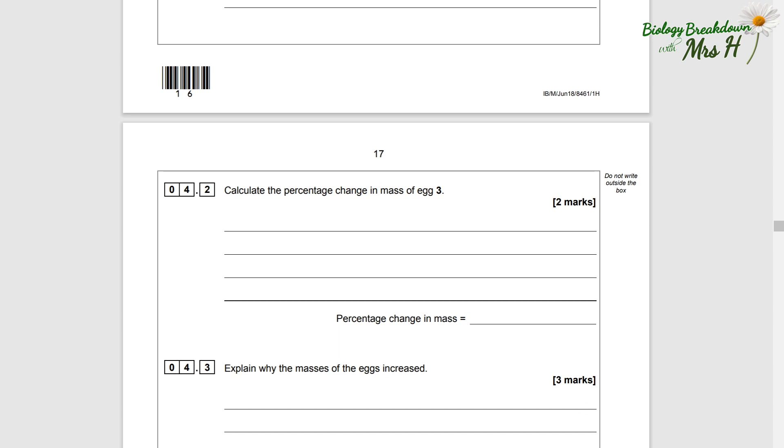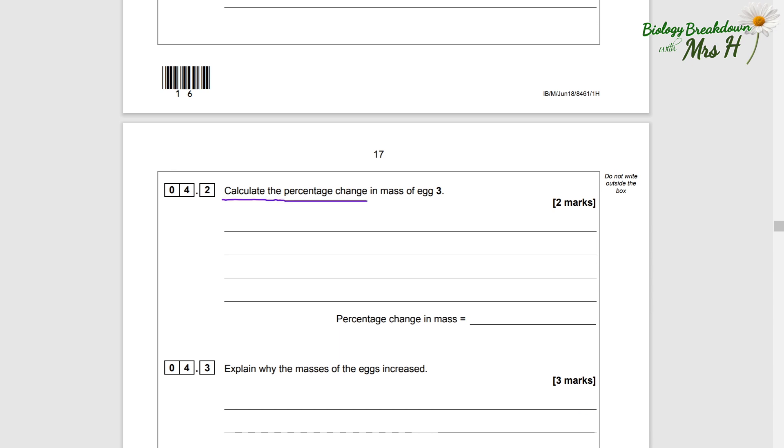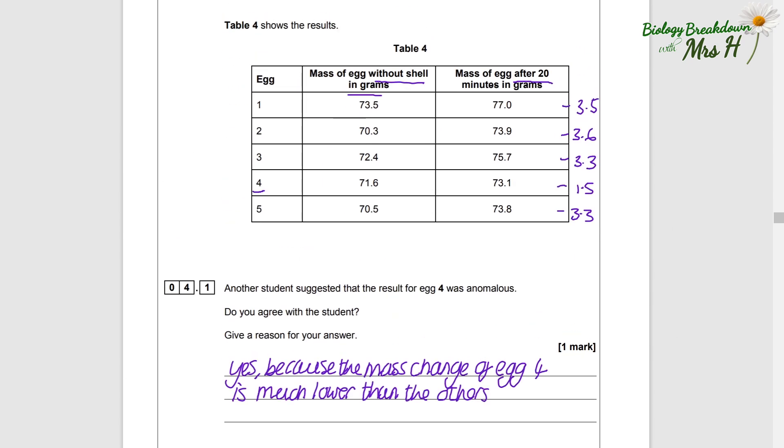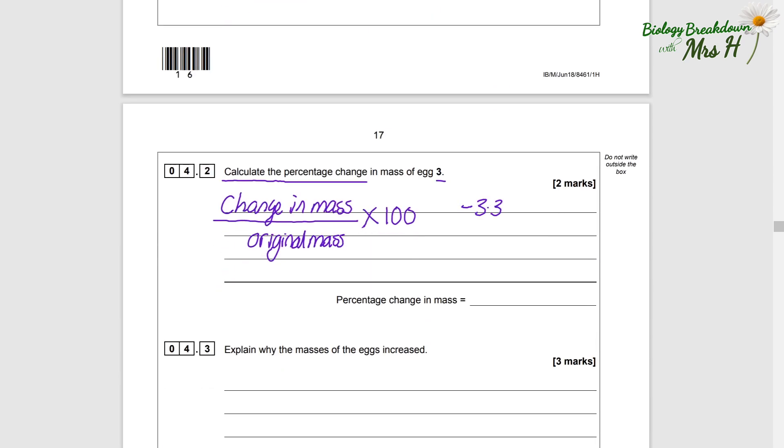Question 4.2: Calculate the percentage change in mass of egg 3. We need to remember the equation for this. So to work out percentage change is: change in mass divided by the original mass times a hundred. If we look back on the table to get our data for egg 3, the change in mass we already worked that out was a decrease of 3.3 grams, divided by its original mass which was 72.4, and then times that by 100.